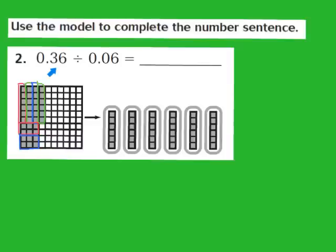When I divide 36 hundredths by 6 hundredths, our quotient turns out to be the whole number 6. We're going to go ahead and write down 6, and that is our quotient. We have now used the model to illustrate decimal division.